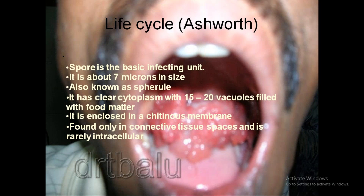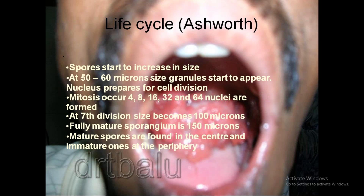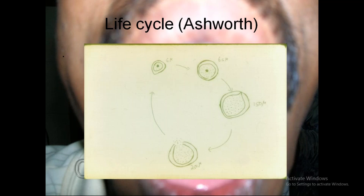The life cycle: the spore is the basic infecting unit, about 7 microns in size, also known as a trophozoite. It has clear cytoplasm with 15 to 20 vacuoles filled with food material, enclosed in a chitinase membrane found only in connective tissue spaces. Spores increase in size to 50–60 microns where granules appear, nucleus prepares for cell division, mitosis occurs, and at the 7th division size becomes 100 microns. The fully mature sporangia is 150 microns, with mature spores in the center and immature ones at the periphery.